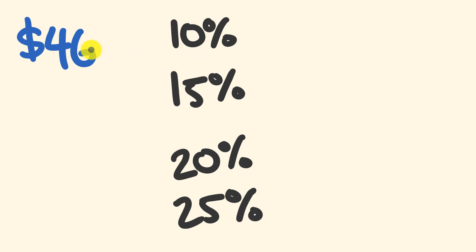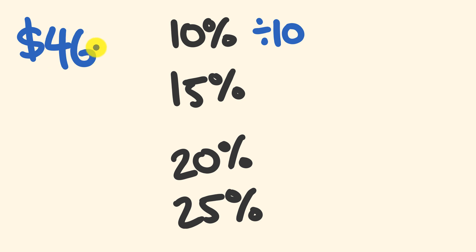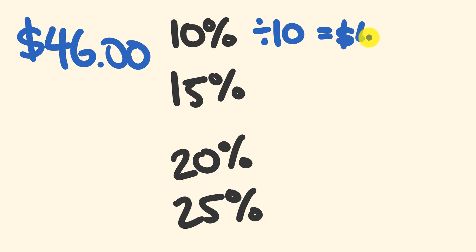Let's start with a 10% tip. Ten percent of a number is literally one tenth of that number, so we take our $46 and divide by 10. That's as simple as moving the decimal place one time to the left, giving us $4.60. Easy — that's the 10% tip.